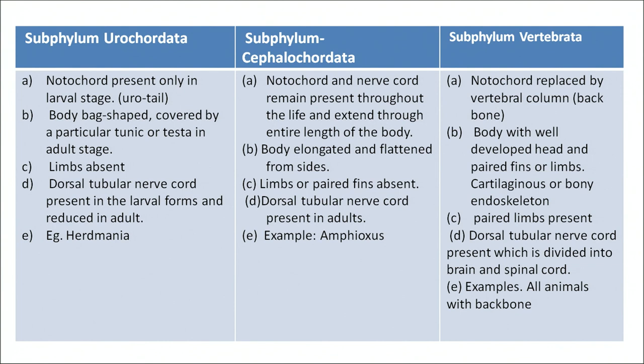In subphylum Urochordata, notochord is present only in the larval stage. Body is sac-shaped, covered by a tunic or test in the adult stage. Limbs are absent. The dorsal tubular nerve chord is present in larval forms and reduced in the adult. Example: Ascidia. In subphylum Cephalochordata, notochord and nerve chord remain present throughout life and extend through the entire length of the body. Body is elongated and flattened from the sides. Limbs or paired fins are present. Example: Amphioxus.